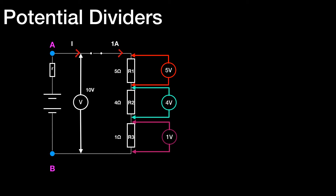So there we have it: 5 volts, 4 volts, and 1 volt across the potential divider. If you had a question with three resistors, you would work out the current first, then calculate the voltage across each resistor using V equals IR, checking that they all add up to the terminal potential difference — 10 volts in this case.